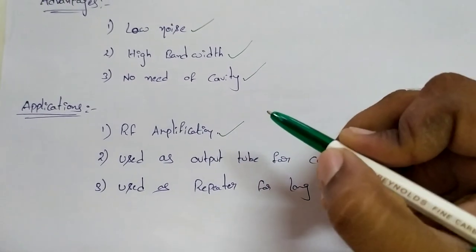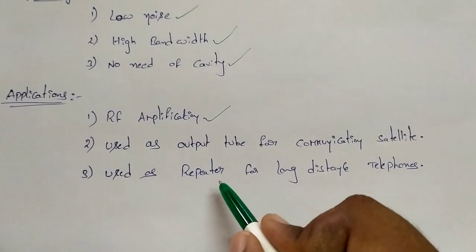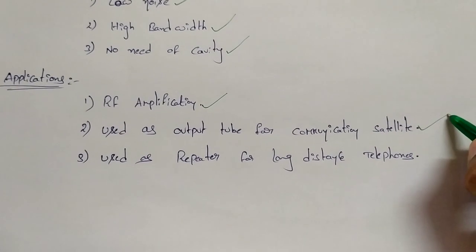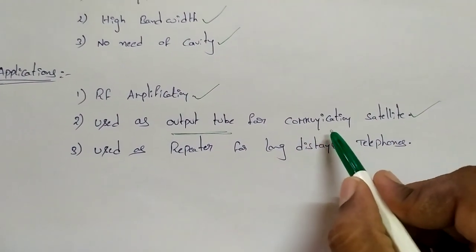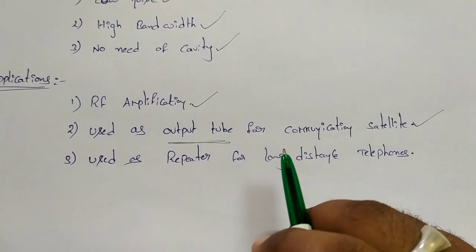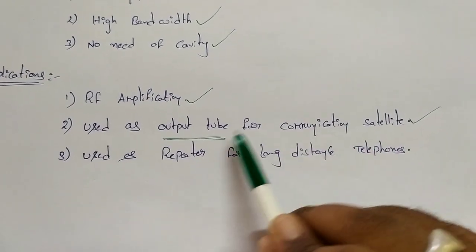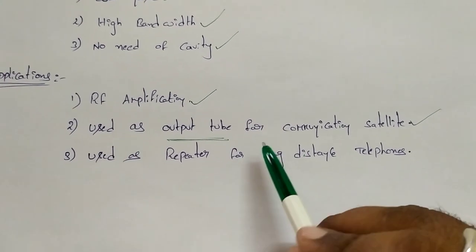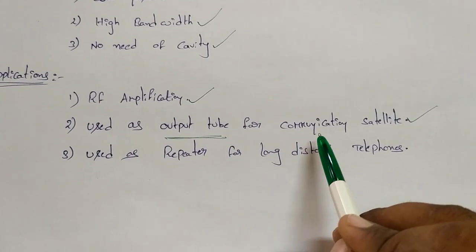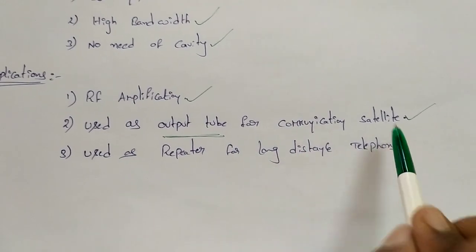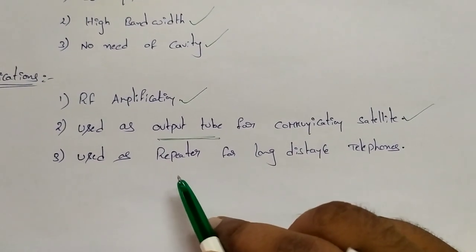If we drive the RF input, we can get the RF output. TWT is used as an output tube for communication satellites, and it is also used as a repeater for long-distance telephones.